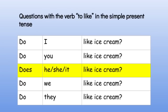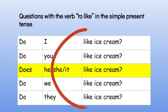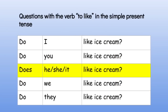Here are questions with the verb 'to like' in the simple present tense. Do I like ice cream? Do you like ice cream? Does he, she, it like ice cream? Do we like ice cream? Do they like ice cream? Notice that 'does' is used with he, she, and it, and the verb 'like' stays the same in question form.